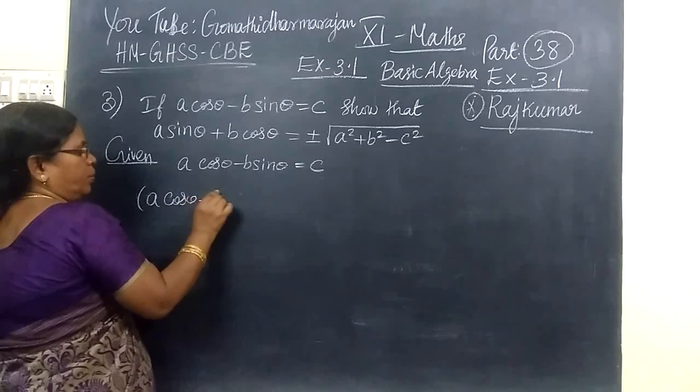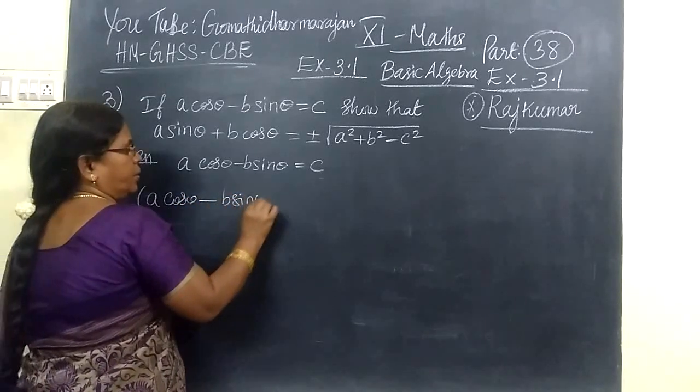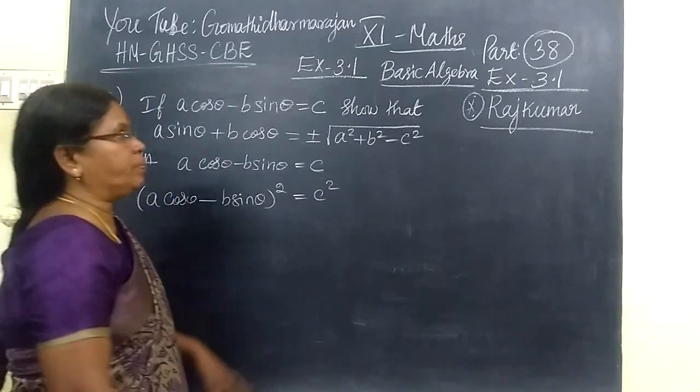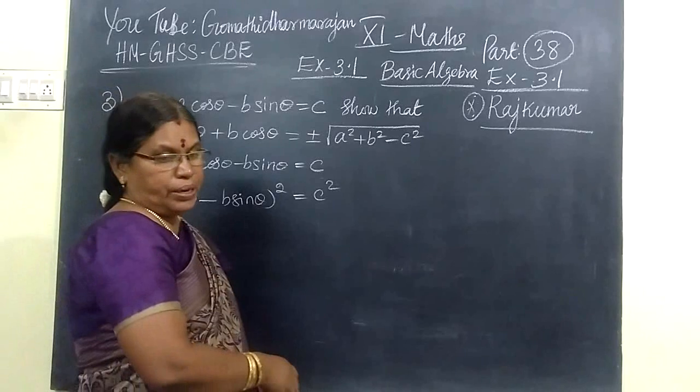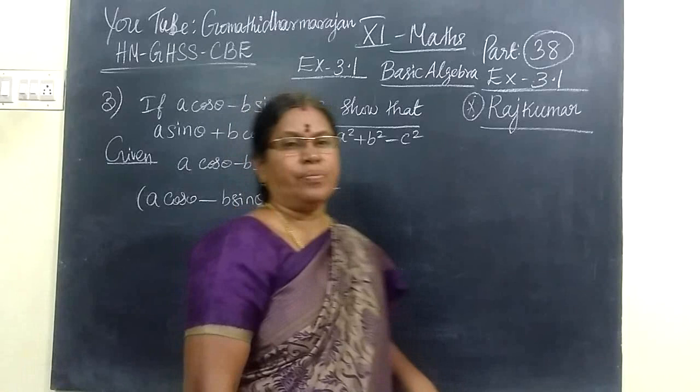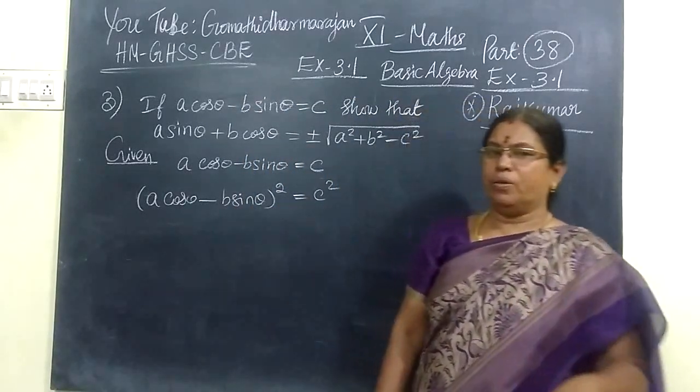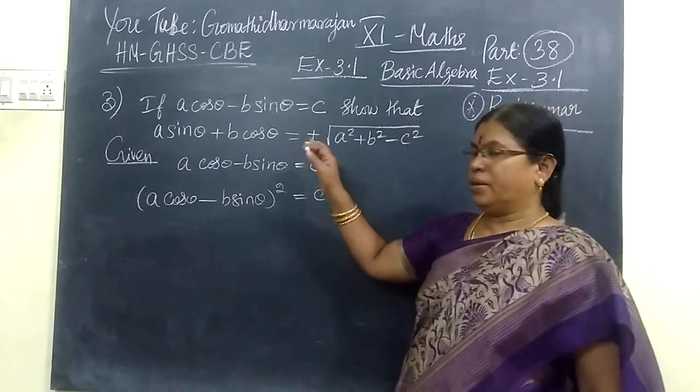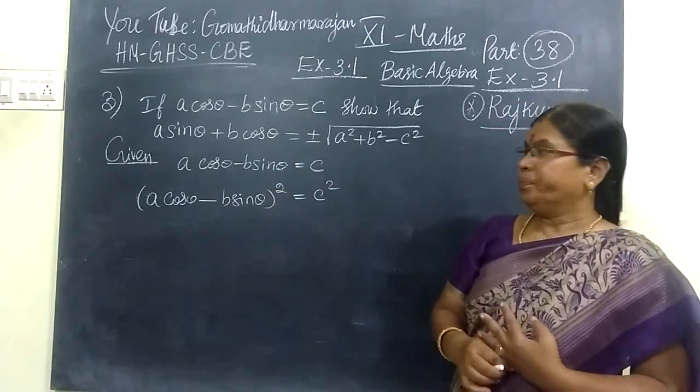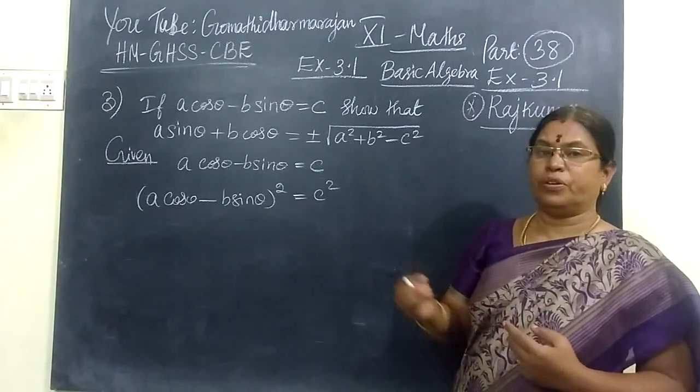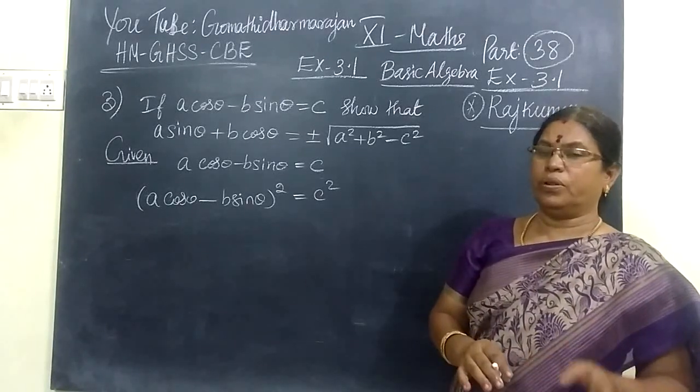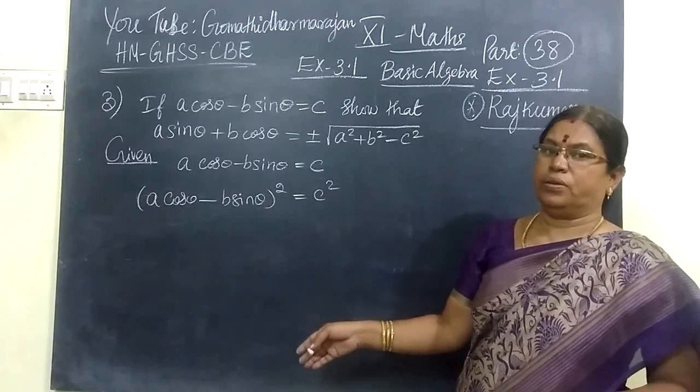A cos theta minus B sin theta equals C. This is the trigonometric chapters, not A.P. Trigonometric chapters are very important with so many formulas. The trigonometric chapters are interesting. If we know the identity, if we know the form, you can very easily follow this chapter.